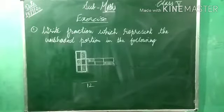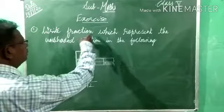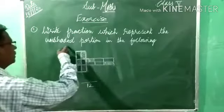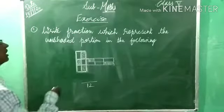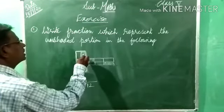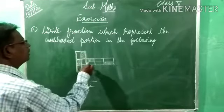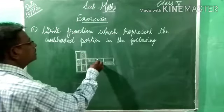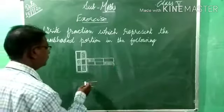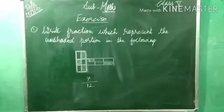Okay, understood? Now, unshaded — write the fraction which represents the unshaded part. Unshaded parts: 1, 2, 3, 4, 5, 6, 7. How many parts? 7. So, the required fraction is 7 by 12.